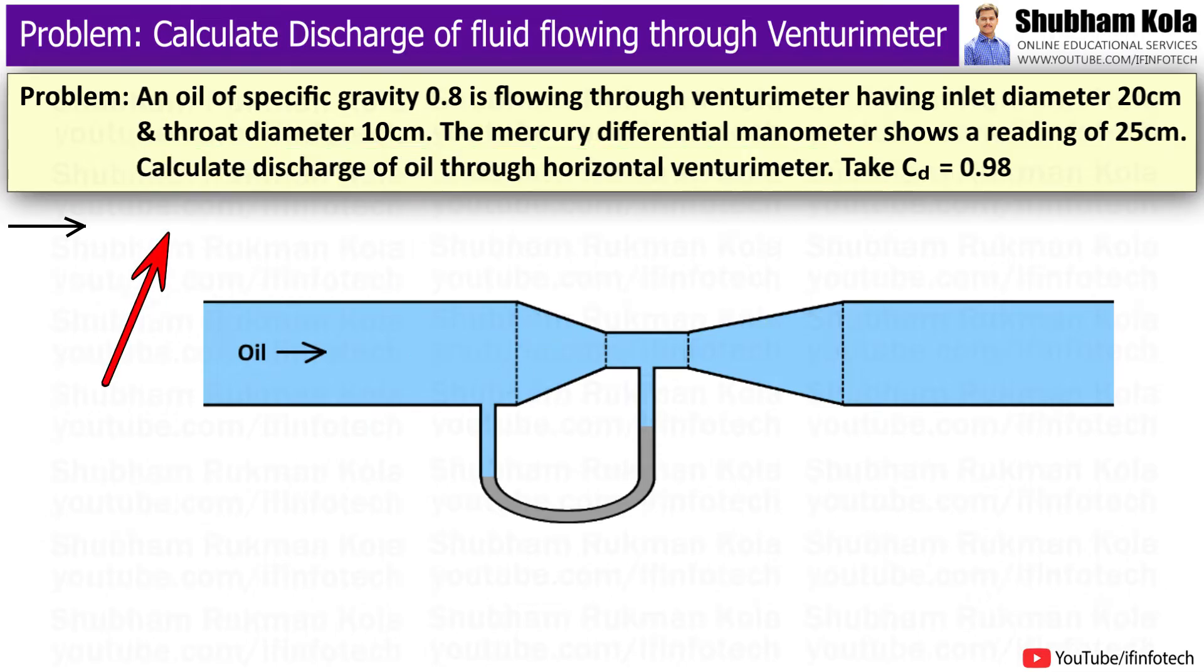The problem is: an oil of specific gravity 0.8 is flowing through a Venturimeter having inlet diameter 20 cm and throat diameter 10 cm. The mercury differential manometer shows a reading of 25 cm. Calculate discharge of oil through horizontal Venturimeter. Take Cd equal to 0.98.